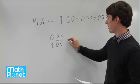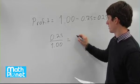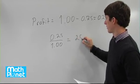So 0.25 divided by 1, that just gives us 25%.